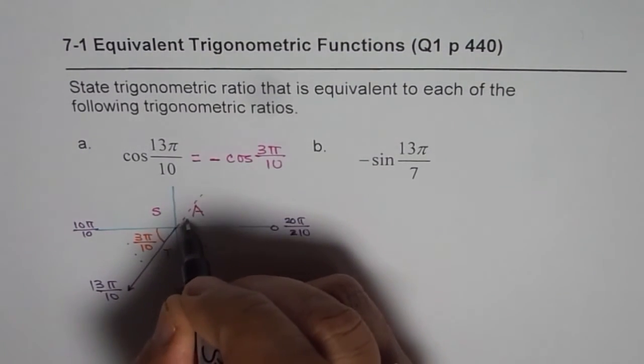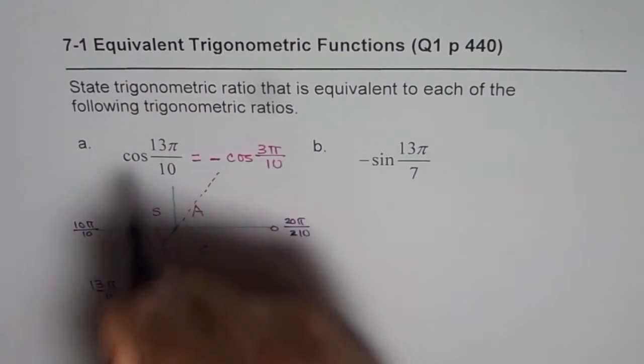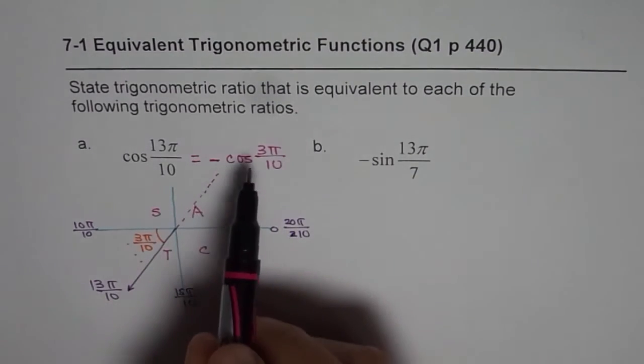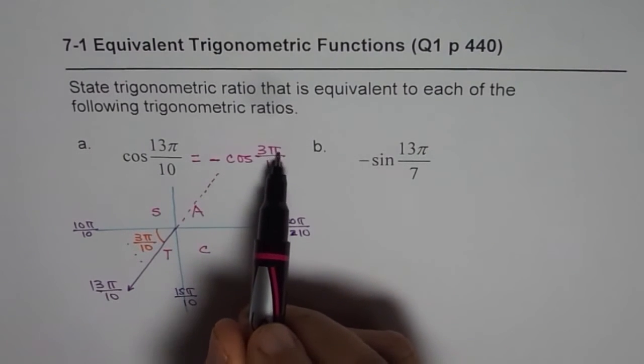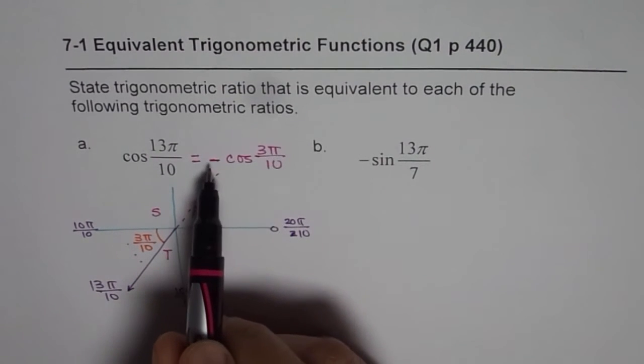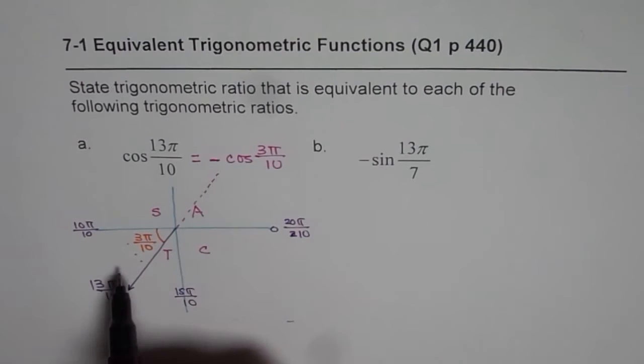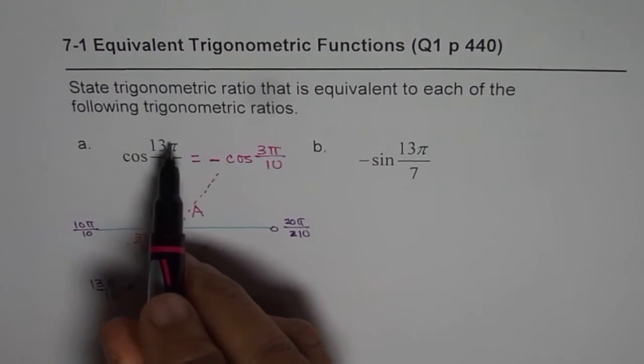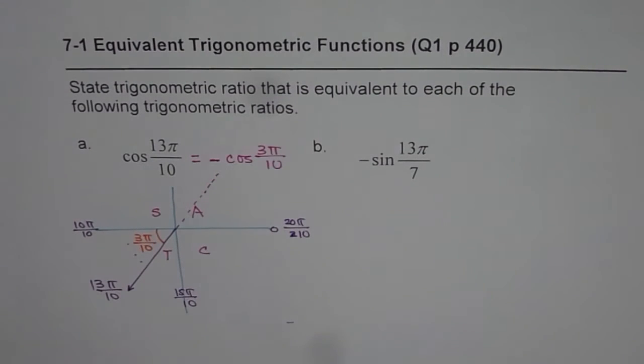So if you see this function in quadrant 1, where all are positive, cos 3π by 10 will return a positive value. Therefore, you have to write this negative here. Since in quadrant 3, cos 13π by 10 is going to be negative. So I hope you understand the concept. It is a very important concept.